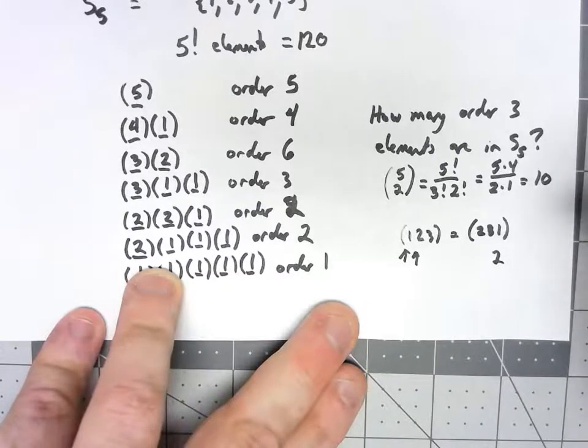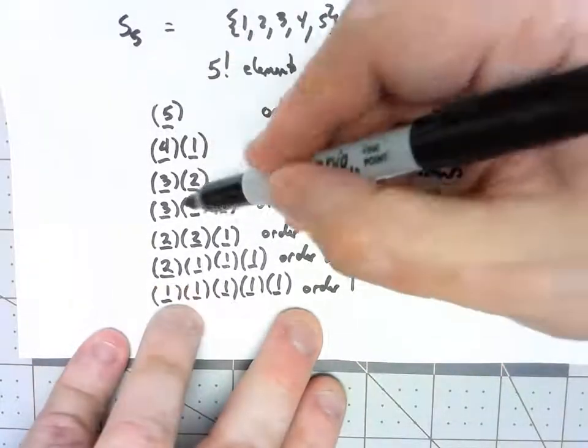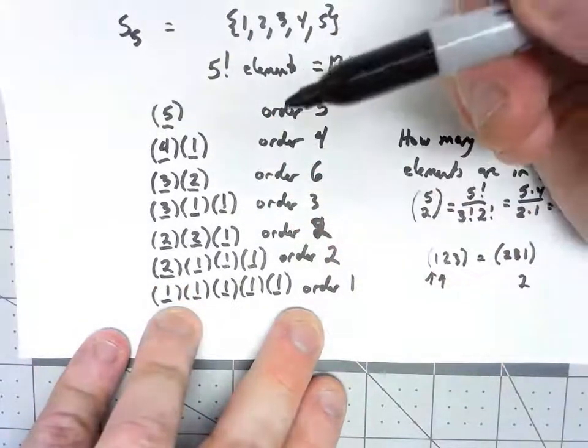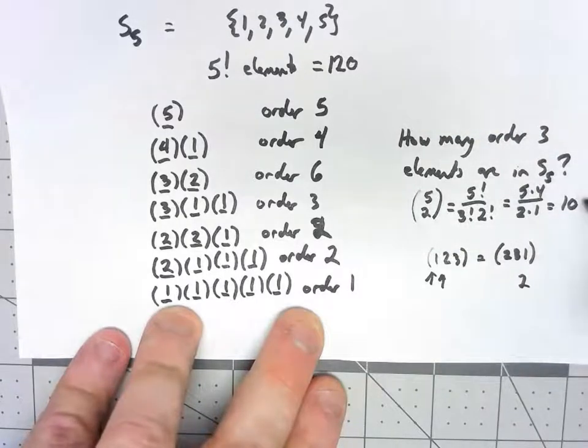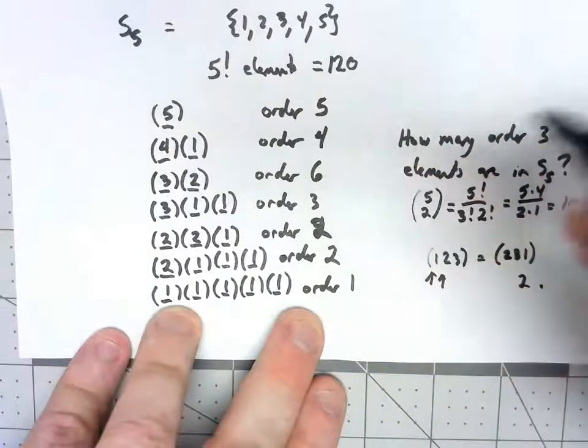So, putting that together, we choose the 2 elements that are fixed. The other 3 elements, there's 2 ways to order them. So, 10 choices for the things that are fixed times the 2 ways to order the remainder. So, here, there are, in fact, 20 elements of order 3.